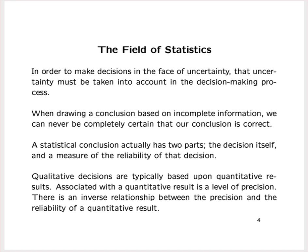In order to make decisions in the face of uncertainty, that uncertainty must be taken into account in the decision-making process. When drawing a conclusion based on incomplete information, we can never be completely certain our conclusion is correct. A statistical conclusion actually has two parts: the decision itself, and a measure of the reliability of that decision. Qualitative decisions are typically based on quantitative results, and associated with a quantitative result is a level of precision. There is an inverse relationship between the precision and the reliability of a quantitative result.